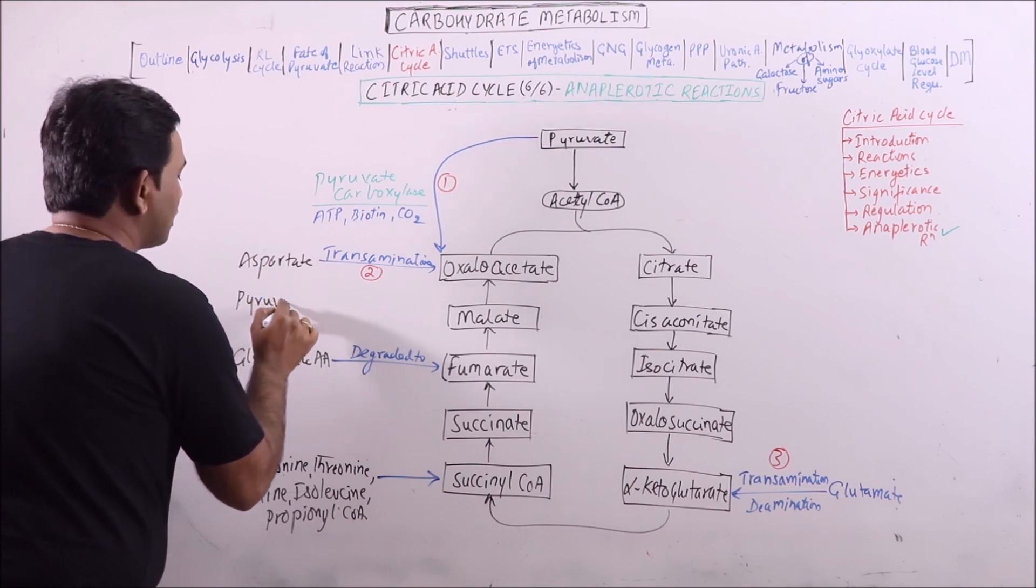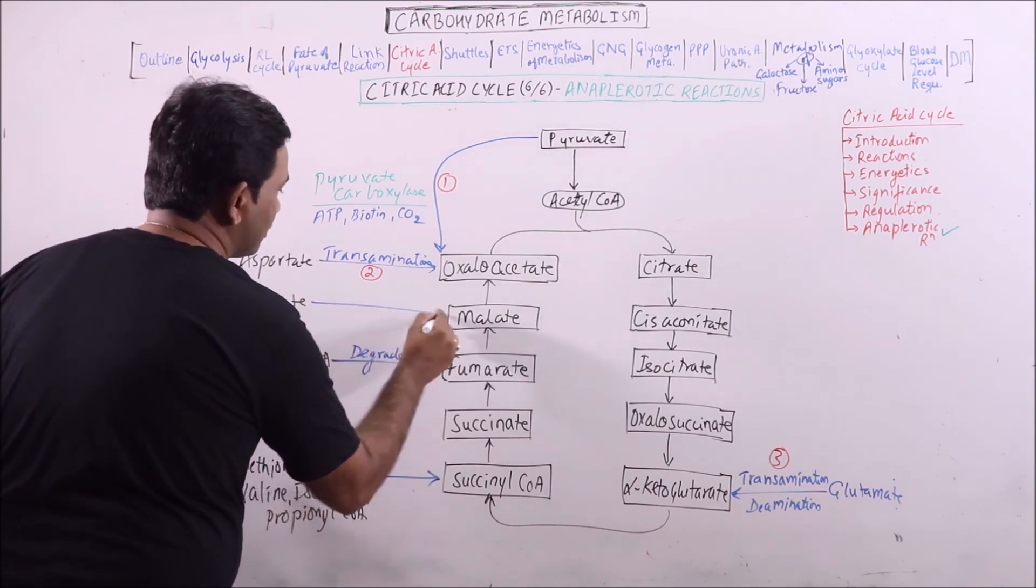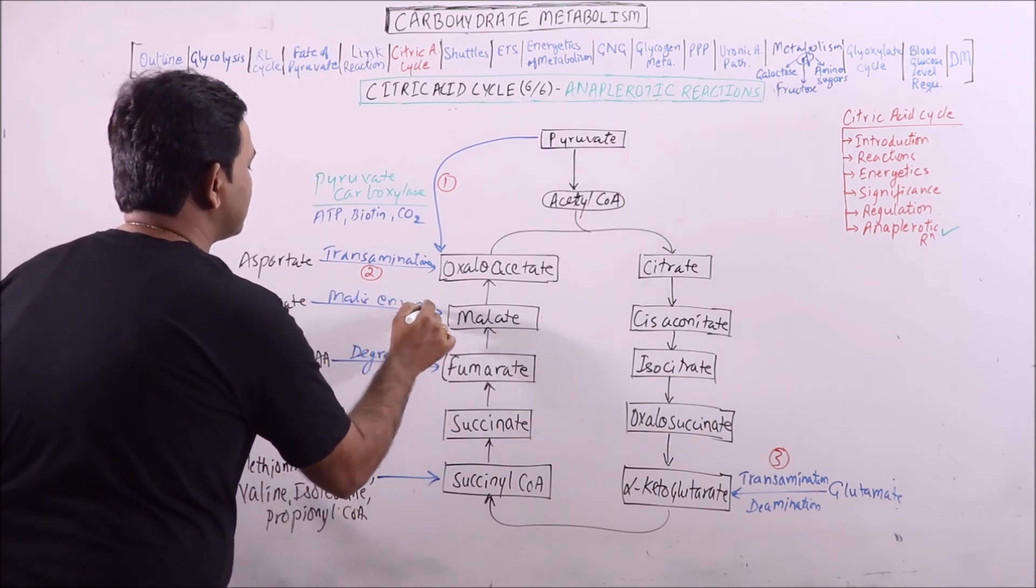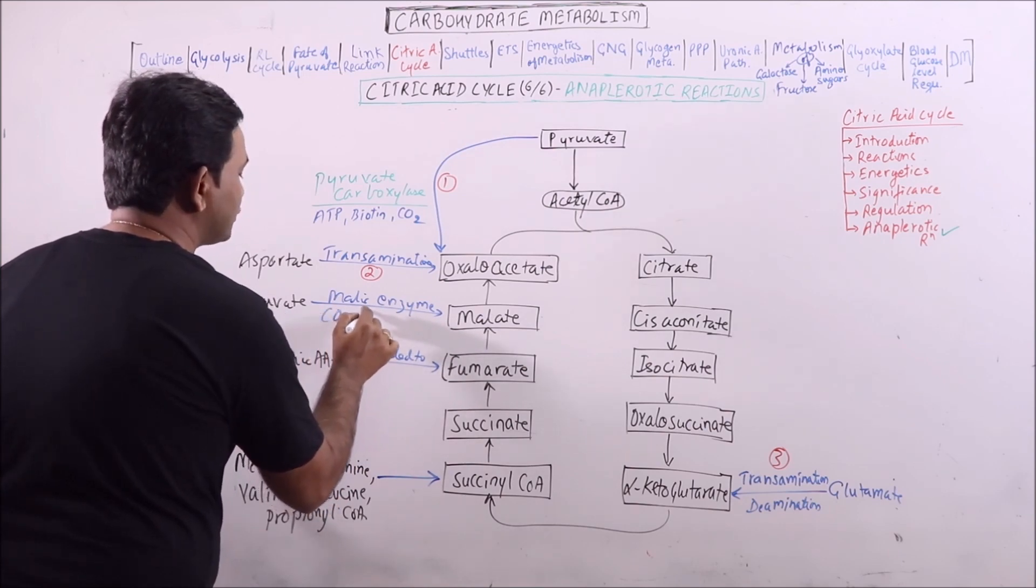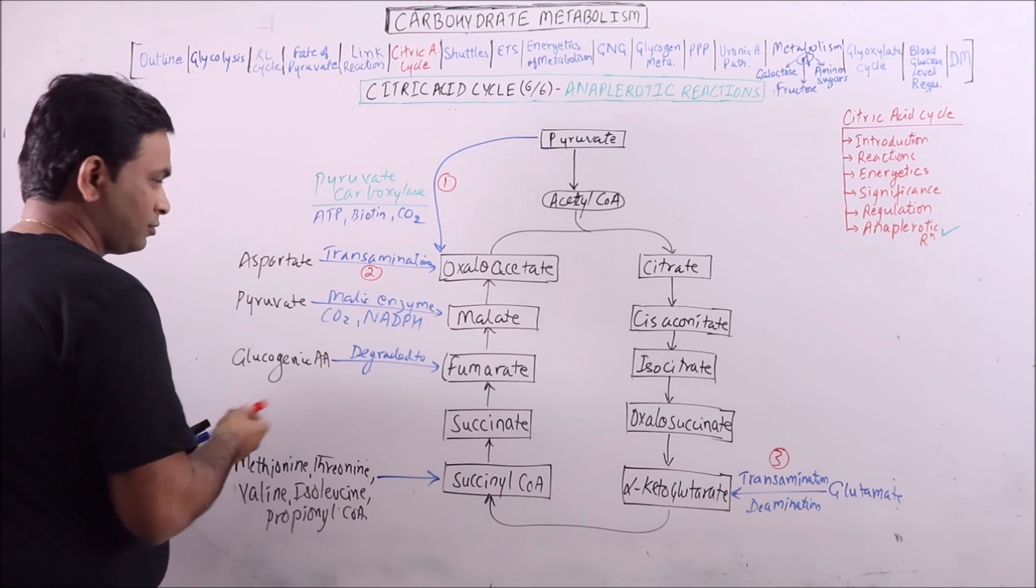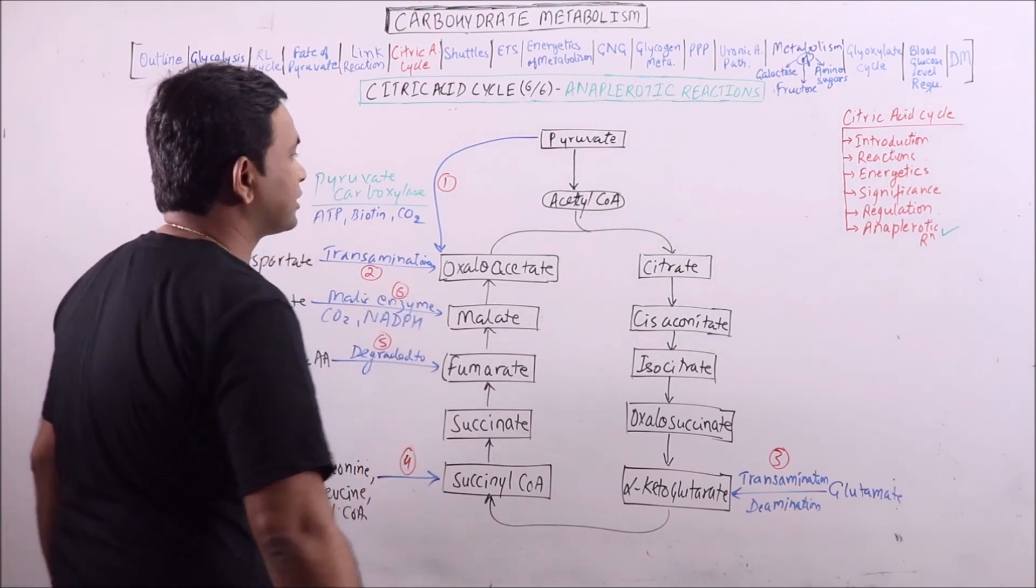Pyruvate can also be converted to malate in presence of enzyme malic enzyme, in presence of CO2 and NADPH. So this is step 4, 5, and 6.